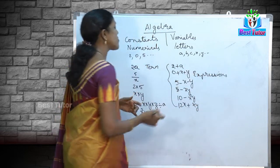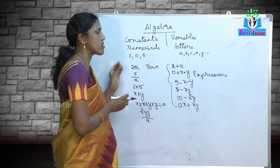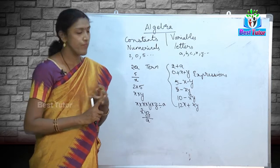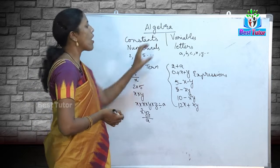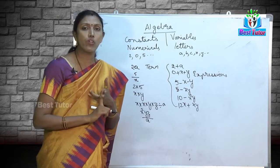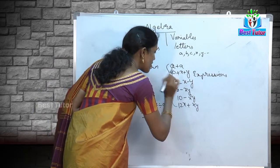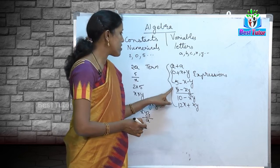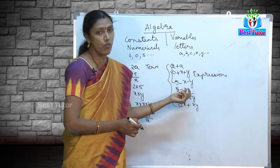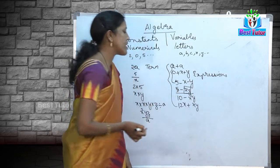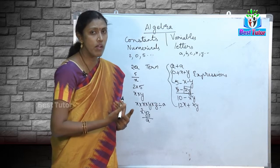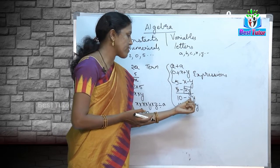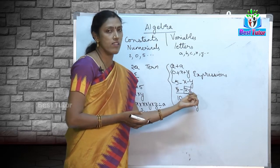Please be clear about the difference between a term and an expression. A term is a combination of constants and variables using only multiplication and division. If I combine terms using addition and subtraction, it is called an expression. For example, 10 − x²y: here x into x into y is a term, and 10 minus that term makes it an expression.